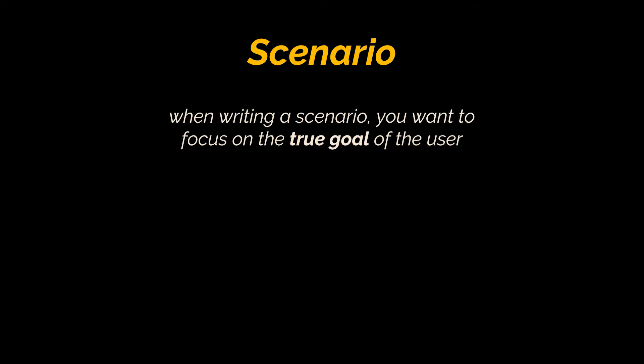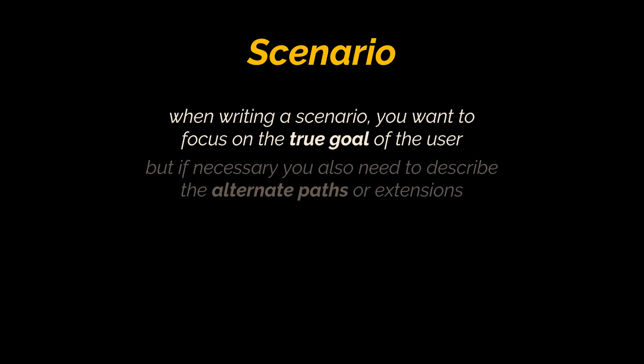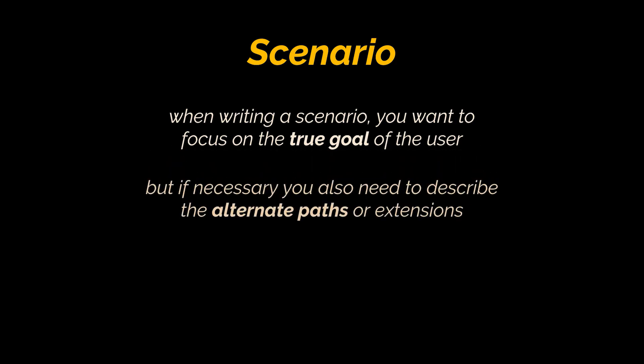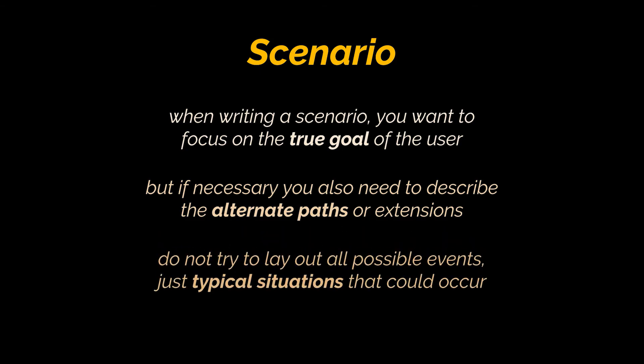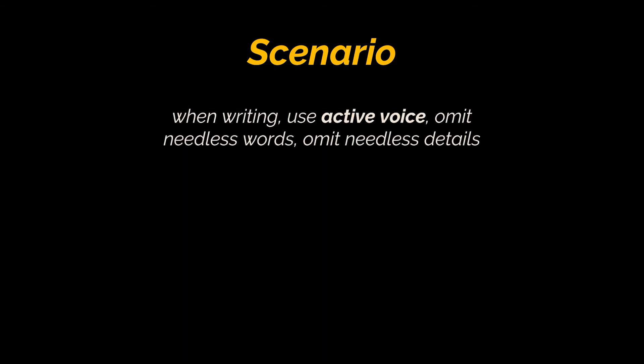Focus on the true goal of the user and emphasize one encounter. A simple casual use case can still have multiple scenarios. You've already defined the main success scenario, but when necessary you also need to describe alternate paths or extensions — for example, what happens when something is out of stock or when a payment method is rejected. You're not trying to cover all possible events, just typical situations. When writing, use active voice, omit needless words and details. Instead of "the system is provided with the payment information by the customer," simply say "customer provides payment information."